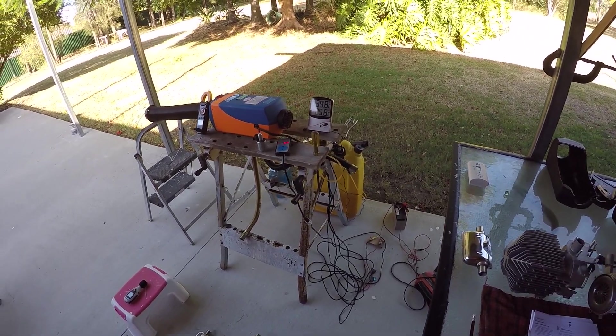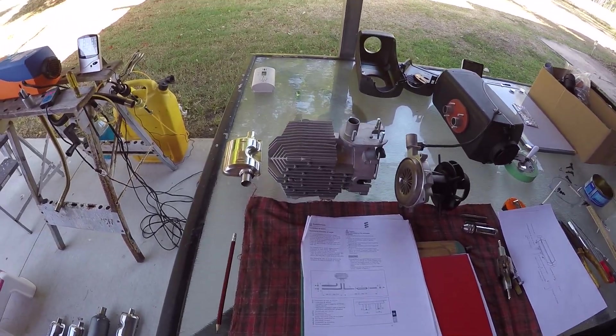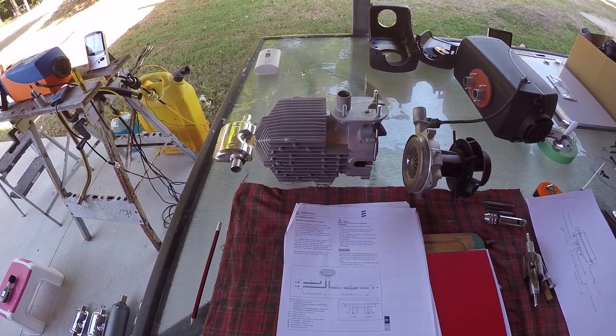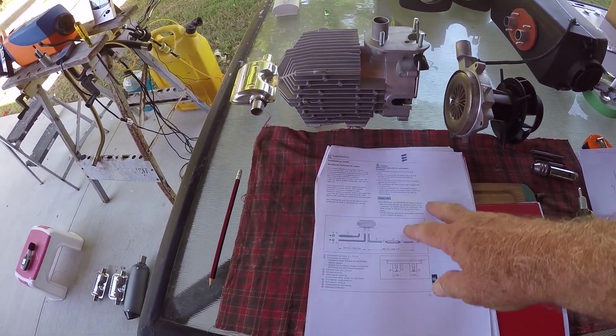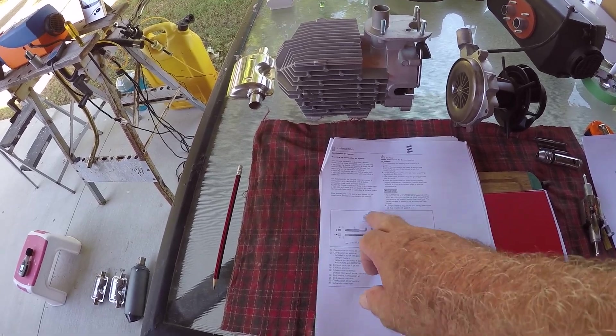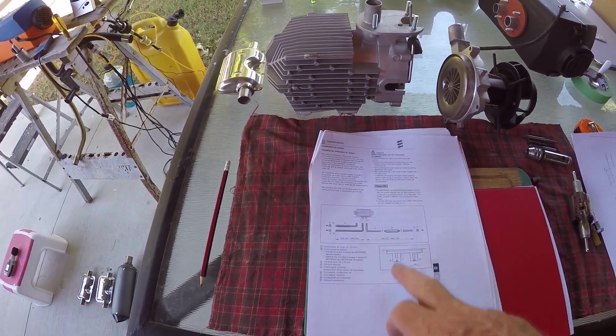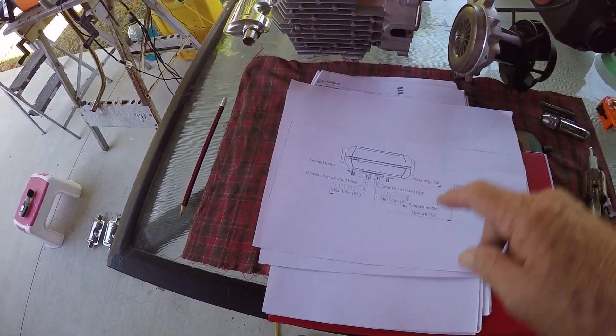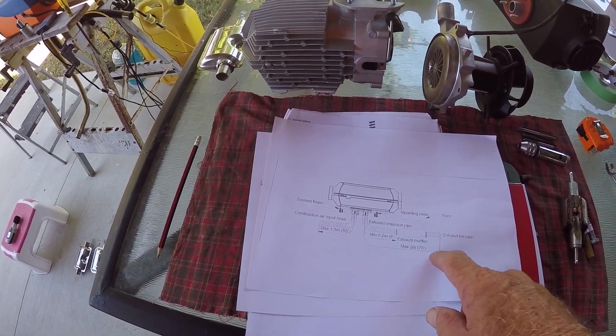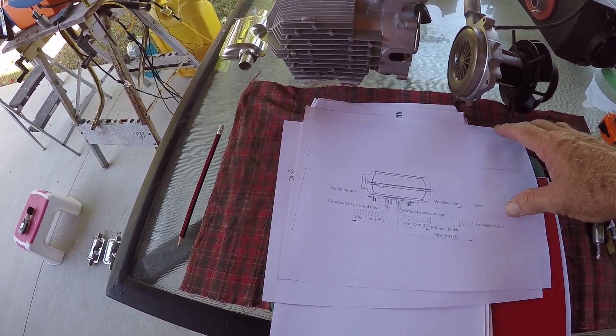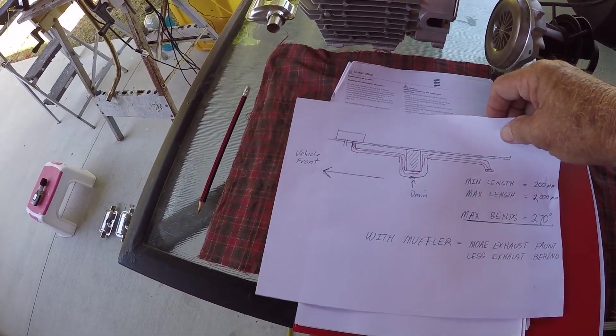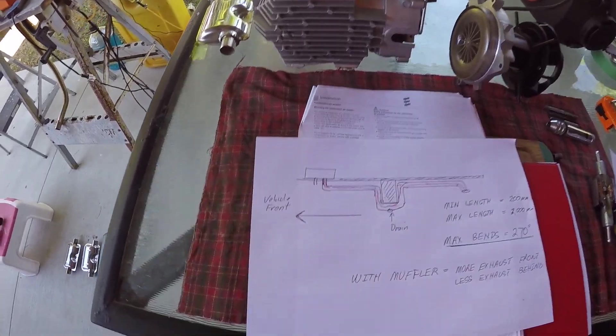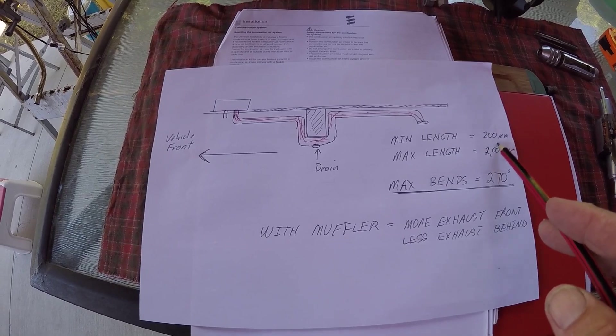Now since the Chinese copied the Ebispatcher little heater, one of the best places we can go for information is into the Ebispatcher manual. They will tell you the parameters of the exhaust system. Basically what you're looking at is a maximum of two meters and a minimum of 200 millimeters.